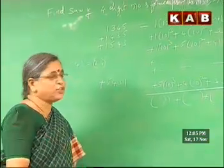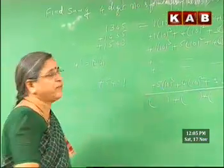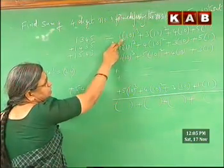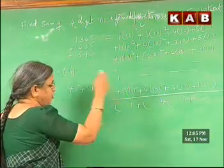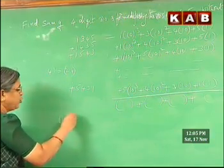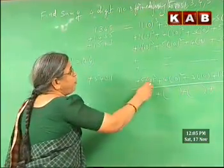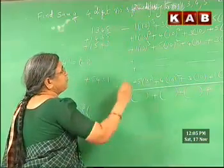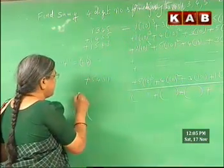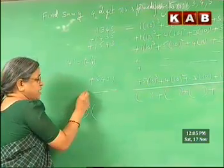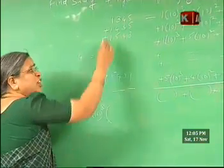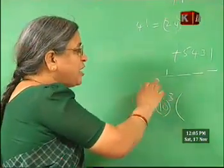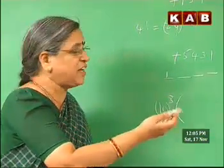Here also I am following the same. First I will add all these units, then tens, then hundreds, then thousands — column wise I am adding now. First, this column we will add. In this column, in the summation I can take 10 cube common — 10 cube into... So how many times is 10 cube coming here? How to check that? Suppose there are 4 places: 1 can be there, 3 can be there, 4 can be there, 5 can be there. How many times will 1 come? How many times will 3 come? How many times will 4 come? How many times will 5 come? That we have to see.